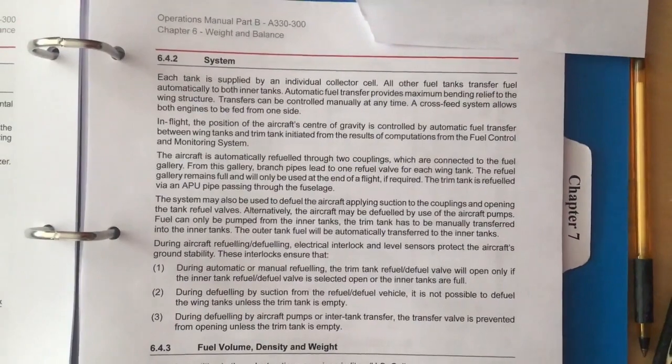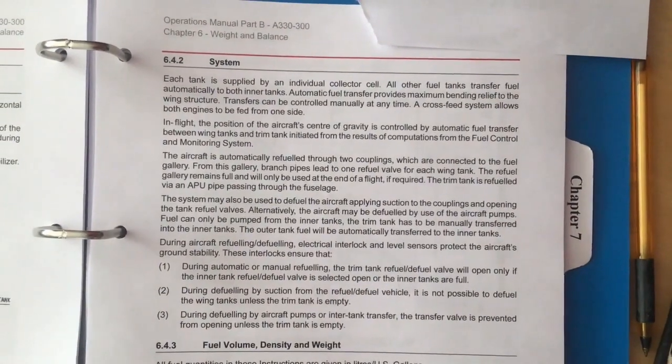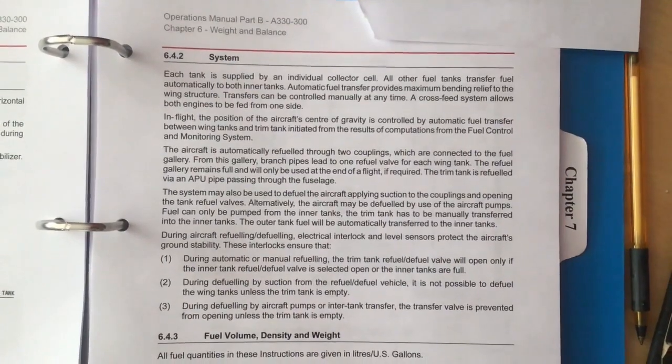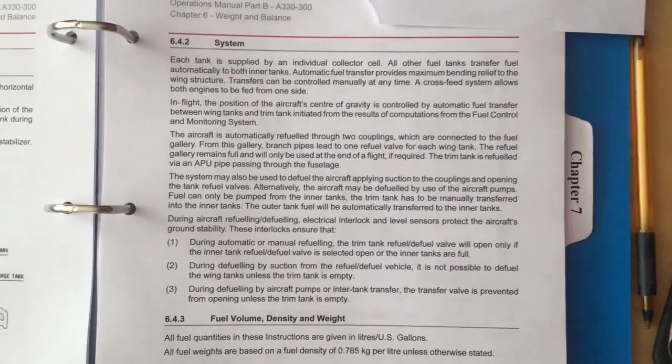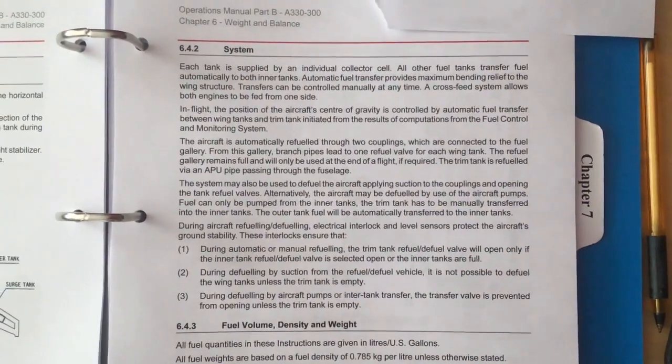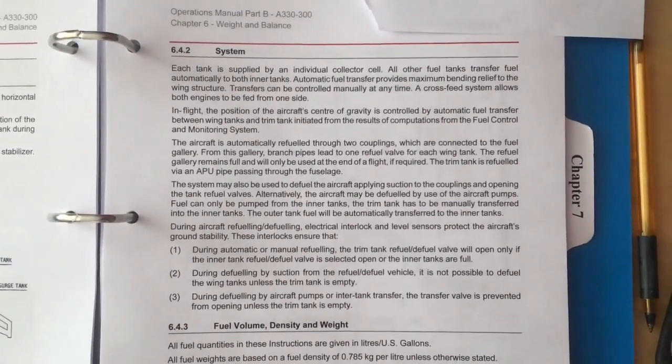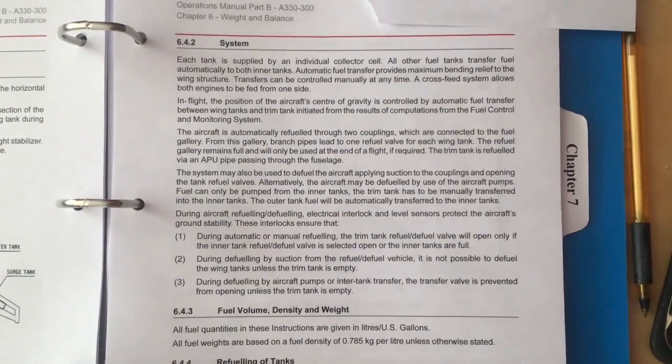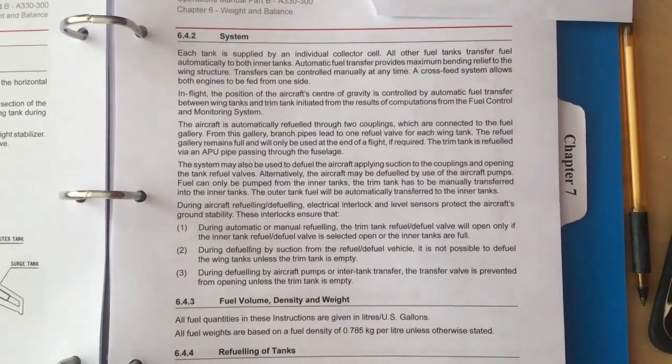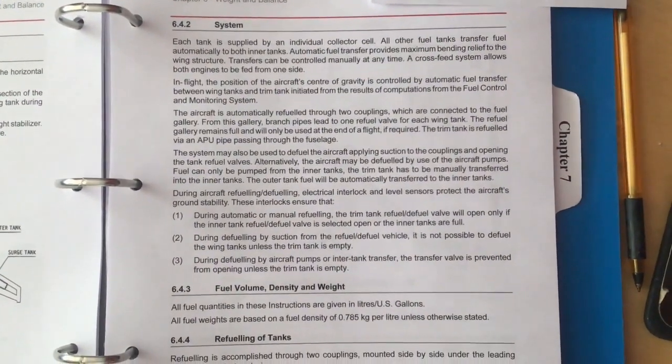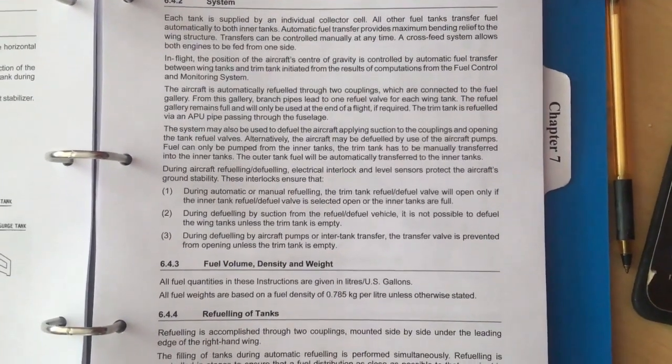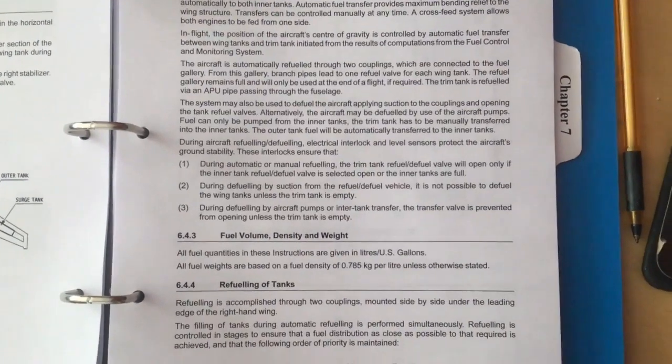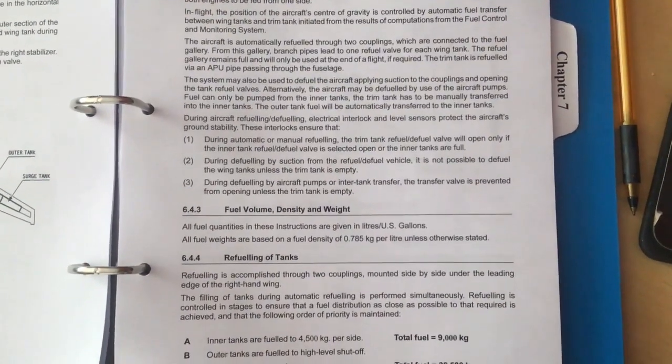The A330-300 has a maximum usable fuel load of just over 76.5 tons. The A330-300 obviously has slightly, because of the lack of the center tank, has a slightly shorter range.